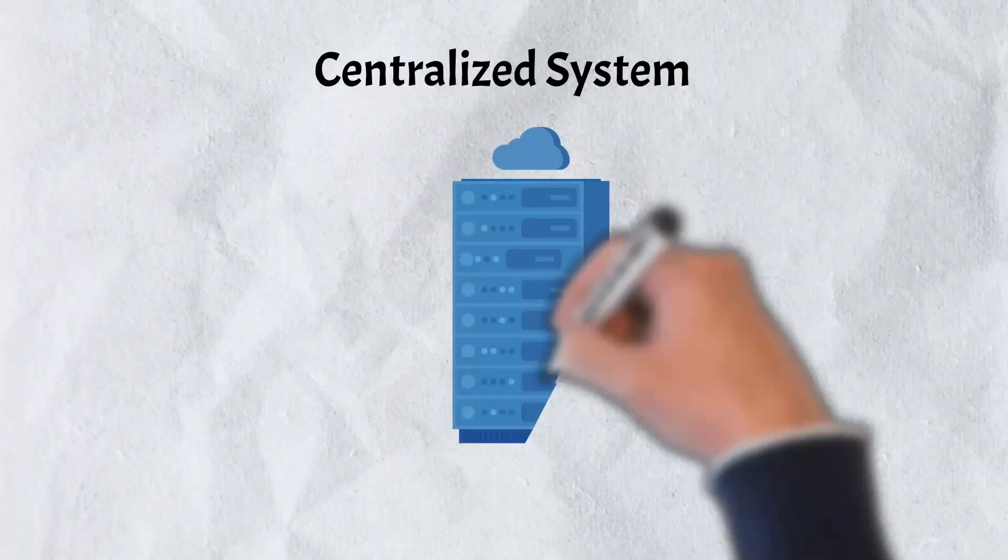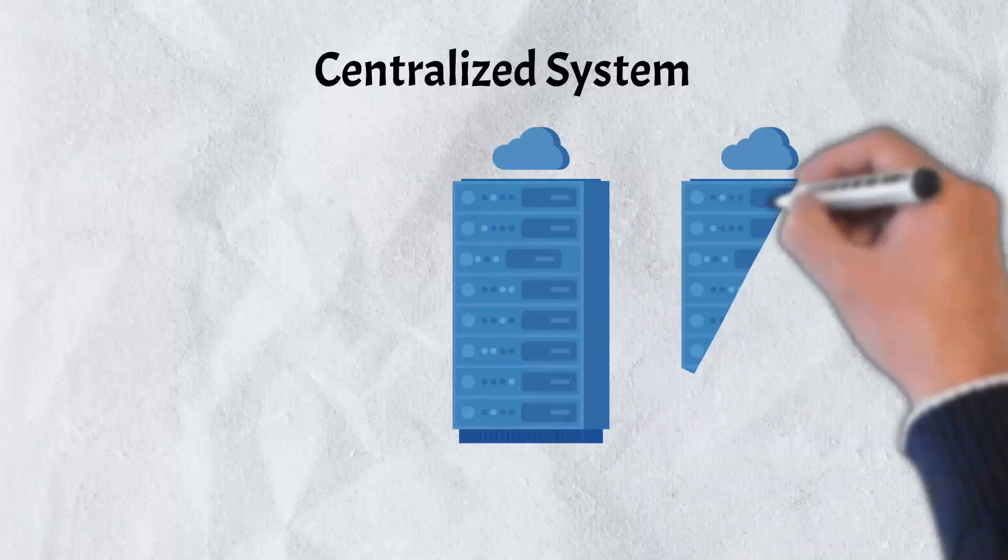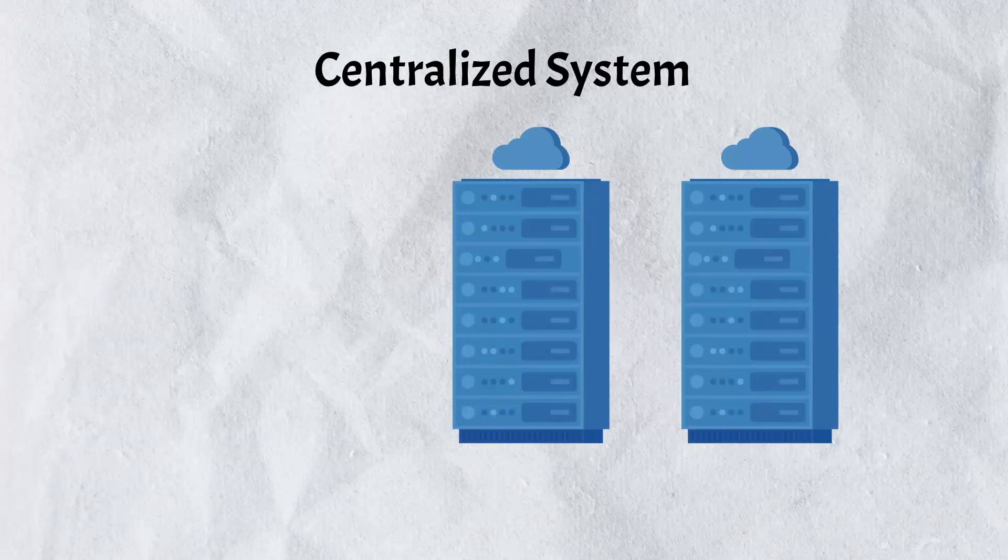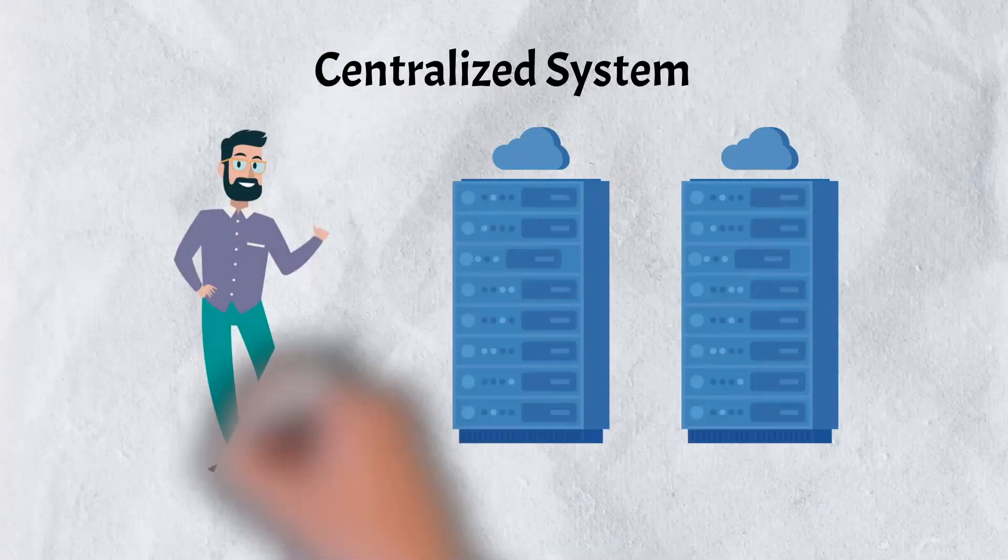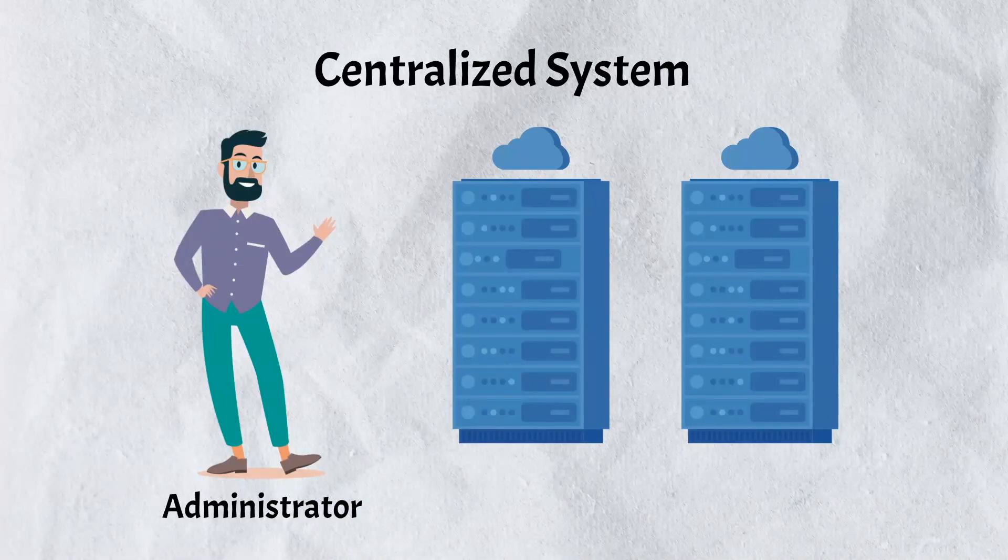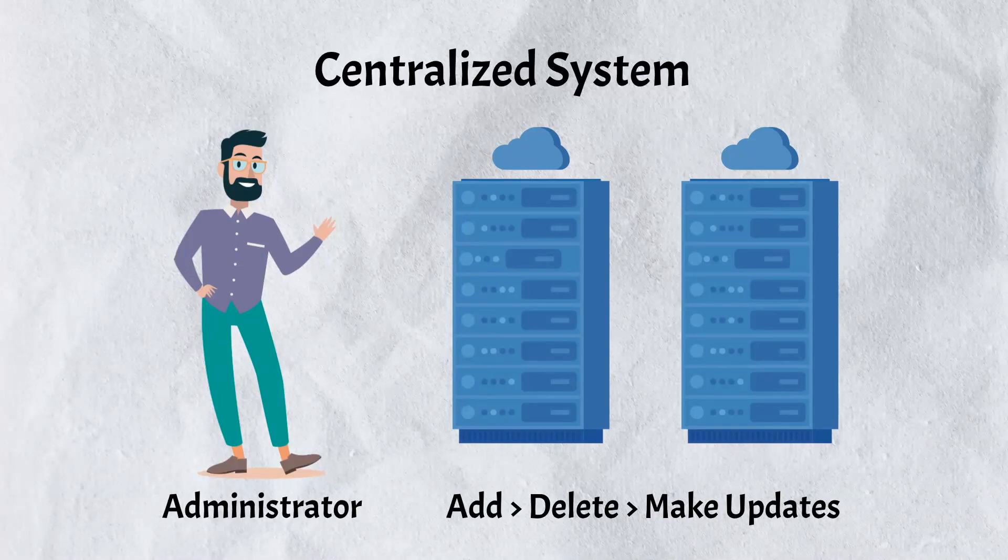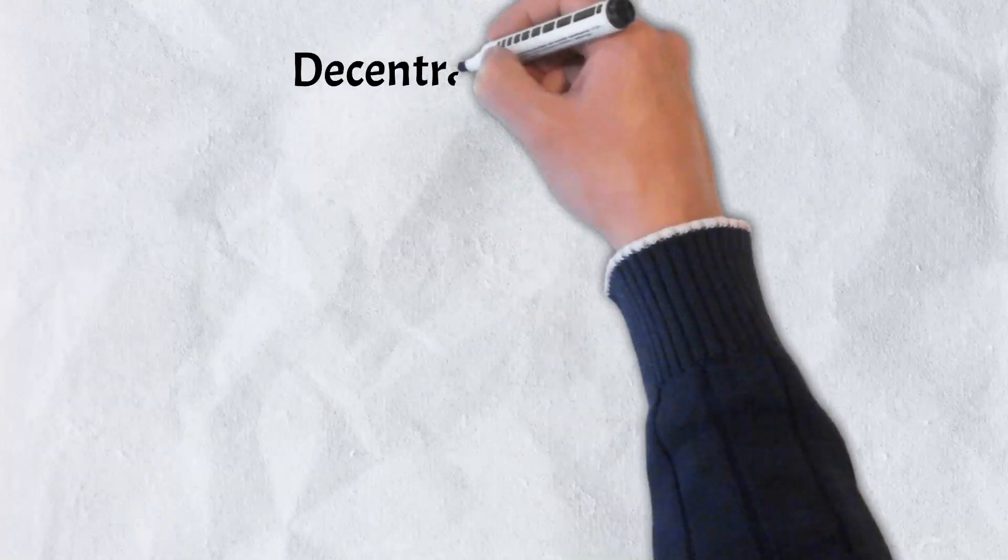Think of it like this. In a centralized system, databases typically hold critical information. The information can range from anything from financial to transactional data. The power to update and maintain the database lies with a central administrator or authority figure. The central administrator can add, delete, make updates, verify information, and so on and so forth.